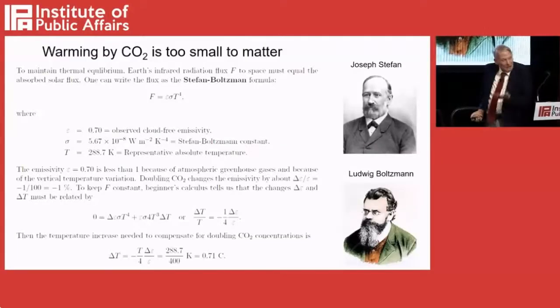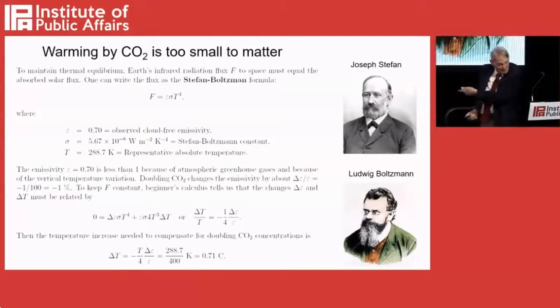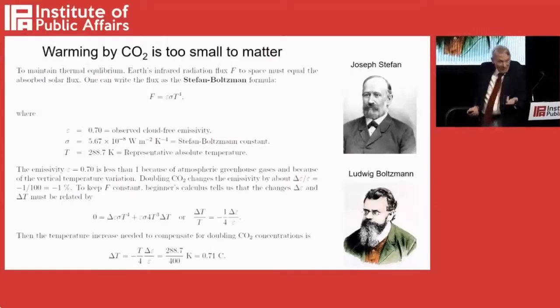Boltzmann couldn't figure out why it would be the fourth power. So he assigned this graduate student — who turned out to be not such a minor figure — the job of figuring out where the factor of 4 comes from. And he solved the problem. It turned out, for those with a science background, it came from simple electromagnetic theory, which had just been developed by Maxwell, and from thermodynamics. If you're Boltzmann, you can derive that in four or five lines. It's an amazing feat — though you can't get the coefficients, you do get the fourth power.